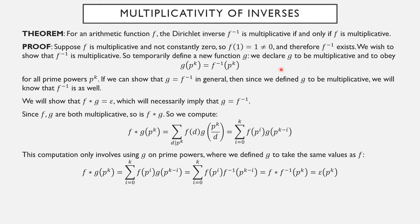The other direction is immediate: if f inverse is multiplicative, then f is just f inverse inverse. This argument already tells us that if f inverse is multiplicative, its inverse would also be multiplicative — and that inverse is f itself. So a function is multiplicative if and only if its Dirichlet inverse is also multiplicative.